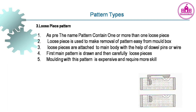Pattern Type 3 - Loose piece pattern: As the name suggests, the pattern contains one or more loose pieces. These loose pieces make removal of the pattern easy from the mold box and are attached to the main body with dowel pins or wire. The main pattern is drawn first, then the loose pieces. This type is expensive and requires more skill.